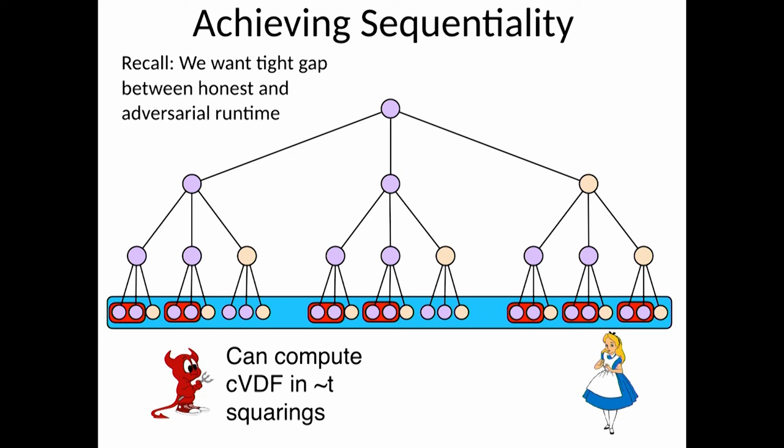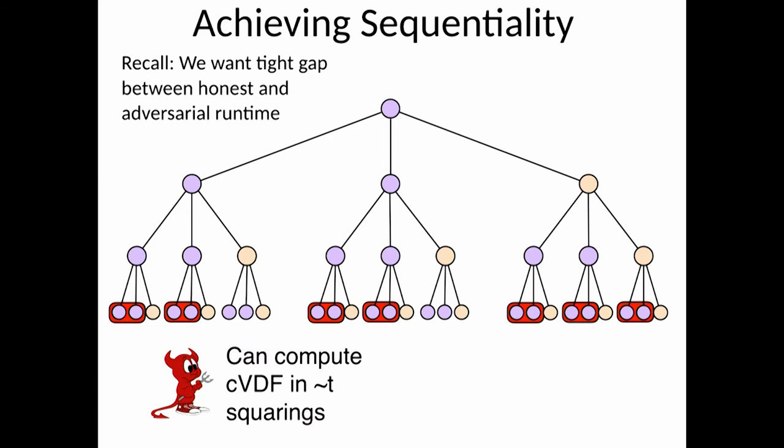And if you do the math, the malicious guy only needs to do T squarings because this is the only thing that's needed to come up with the final value. But we need to do T to the log base two of three because we need to do much more proof steps. So the solution, and these two have a polynomial gap, T and T to the log three.